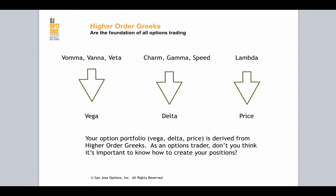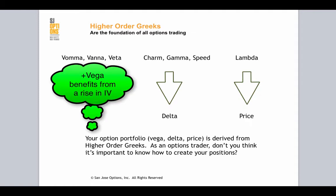I want to talk a little about Vega and Delta first. Your Vega position, as most option traders know, is the portfolio sensitivity to volatility changes. For example, if you have a positive Vega, theoretically, and the volatility rises, then you profit from your Vega position.